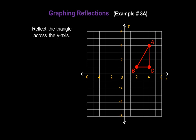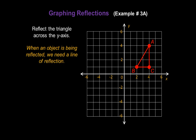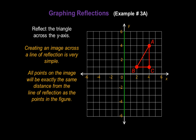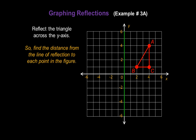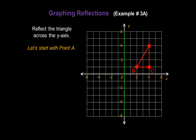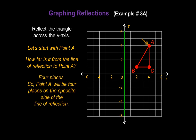Now let's look at graphing a reflection. Let's reflect the triangle across the y-axis. When an object is being reflected, we need a line of reflection — the y-axis is our line of reflection for this problem. Creating an image across a line of reflection is very simple: all points on the image will be exactly the same distance from the line of reflection as the points in the figure. So find the distance from the line of reflection to each point in the figure, then create new points for the image on the opposite side. Let's start with point A — it's four places from the line of reflection, so point A prime will be four places on the opposite side. That's point A prime.